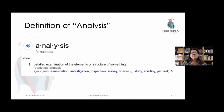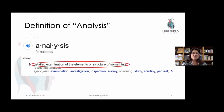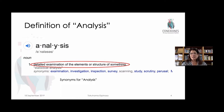If we start off with this basic definition of analysis, we get this idea that it's a detailed examination of the different elements or structures of something. And if we try to look at some synonyms for that, it means to examine something, to investigate, inspect.